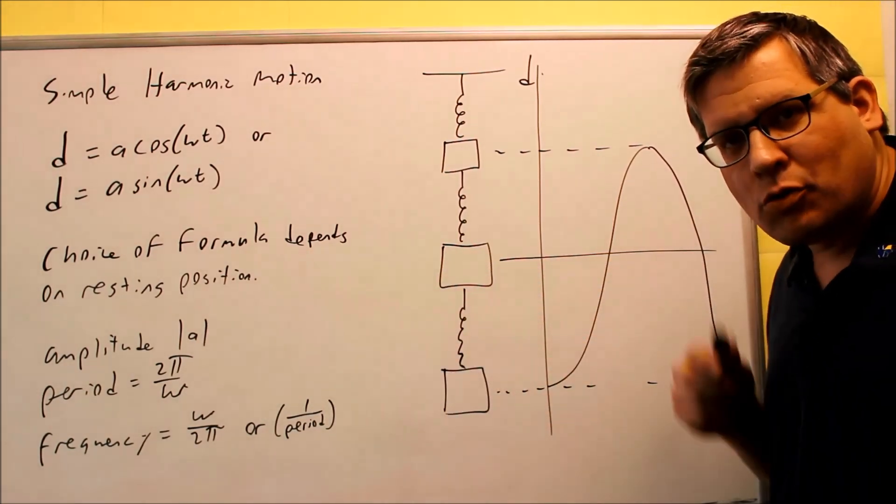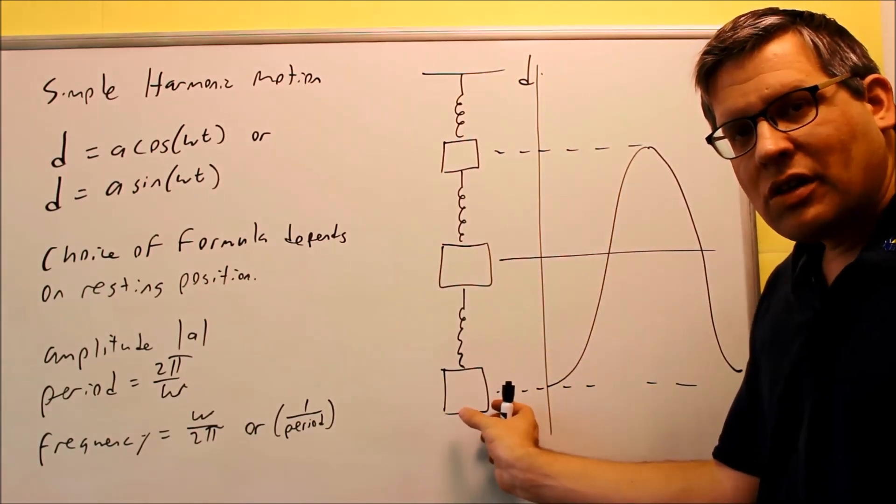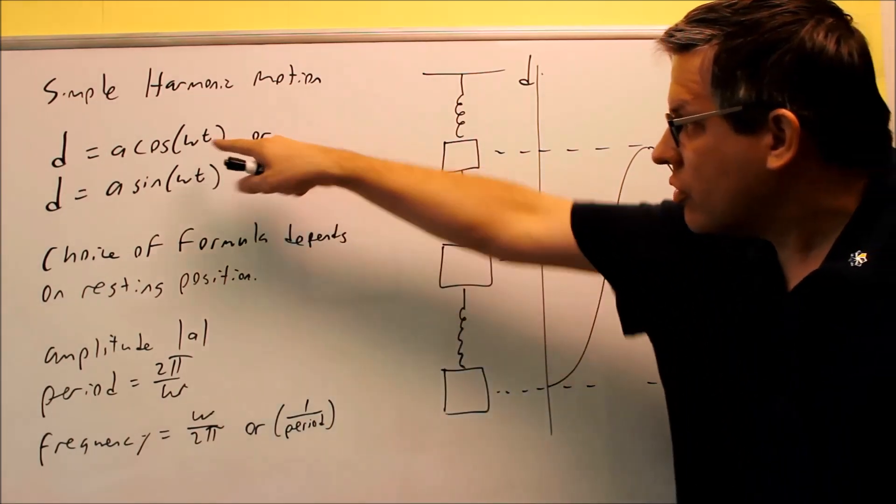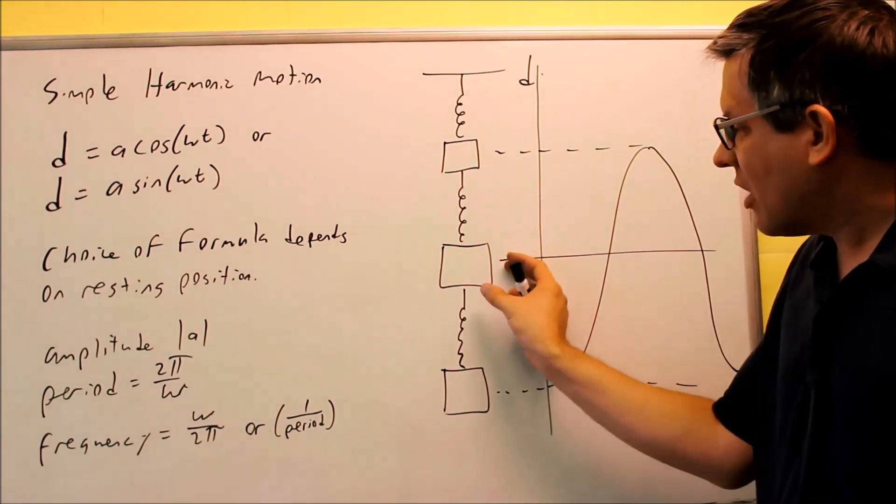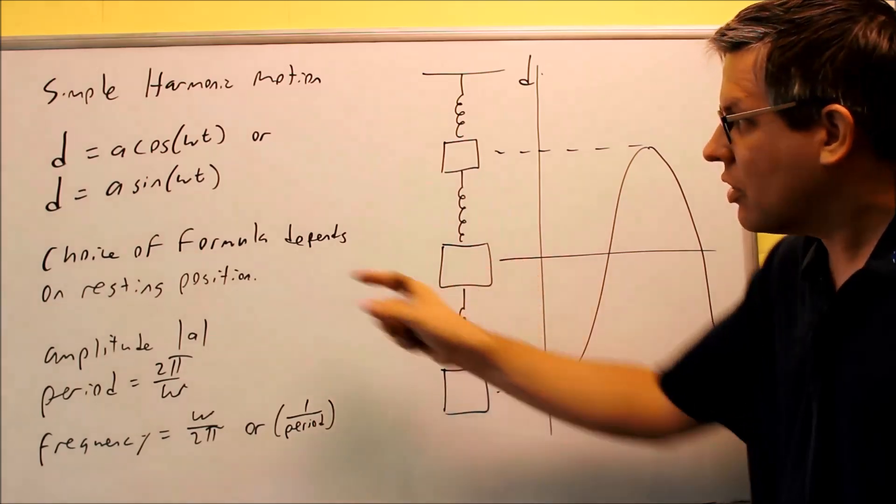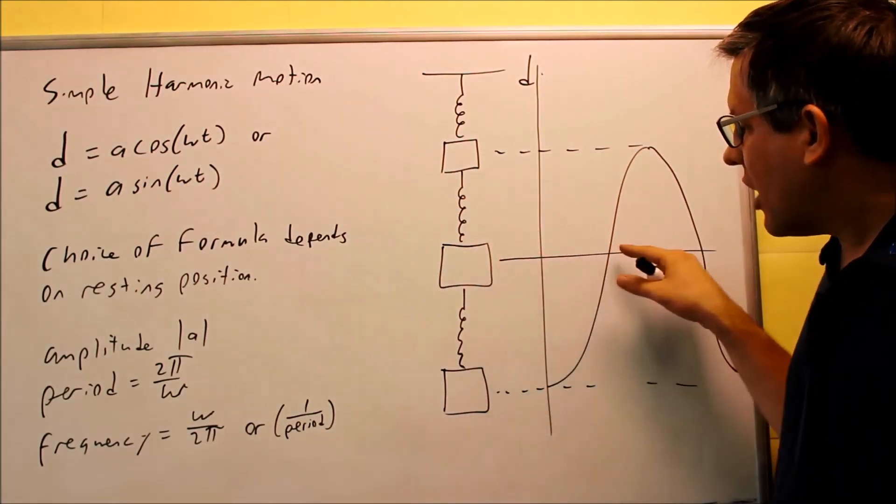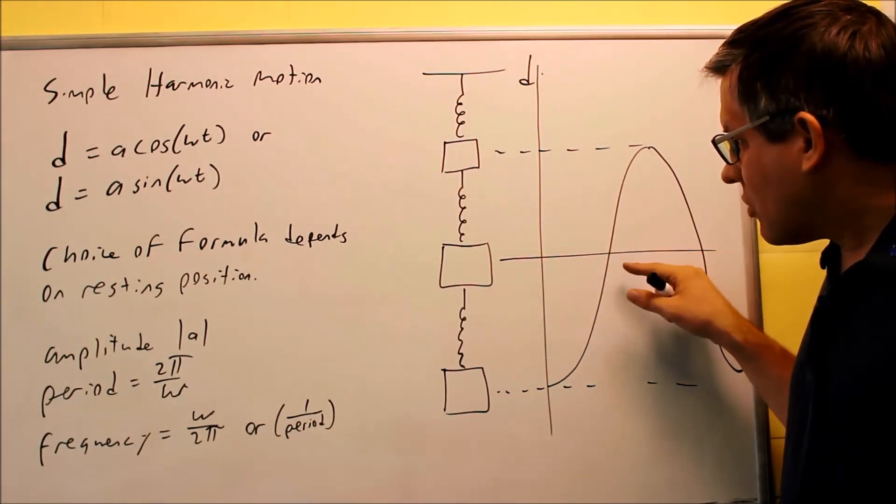If I want the weight to start down here, that actually is starting at an amplitude. So in that case, I probably would want to choose a cosine graph that describes this. But if I have something that's here at the resting position, I'm starting the cycle at the resting position, then I want to use the sine graph because that sine graph always begins here on the x-axis.